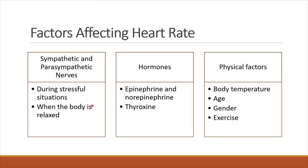On the other hand, when the body is relaxed, parasympathetic nerves slow down the SA node, which decreases the heart rate and conserves energy. The second factor is hormones. Epinephrine and norepinephrine are released by the adrenal medulla, and thyroxine (T4) is released by the thyroid gland. These hormones are released during physical and emotional stress, such as working under dangerous conditions, and their release increases the heart rate.